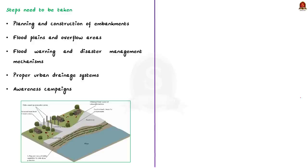The first and foremost thing is construction of embankments. Planning and construction of embankments should be done to help divert water into open land areas in case of heavy rains. Flood plains and overflow areas should be created along rivers and streams to help overflow the excess water without causing any damages. In addition to this, flood warning and disaster management mechanism should be improved to better handle the situation. The government can also take up proper urban drainage system to avoid blockage of drain, which is the main cause of urban flooding. And finally, government can take up awareness campaign to educate the public about the steps that can be taken to avoid flooding and also the steps that can be taken when flooding occurs. These are the steps that the government can take to mitigate flooding in the region.